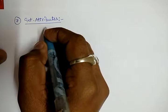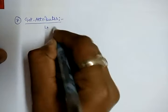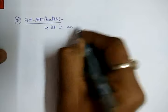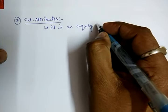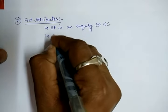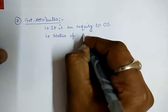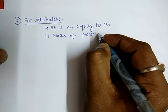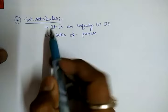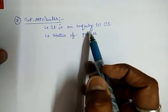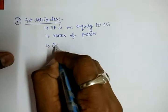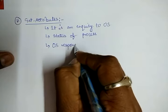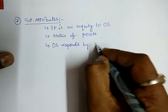If we go into the depth of this system call, we can say it is an inquiry — a kind of question which is asked to the operating system to know about the status of processes. If an operating system is running a number of processes, then this system call will be a kind of inquiry to the operating system to know the status of a process.